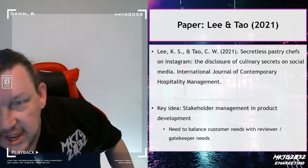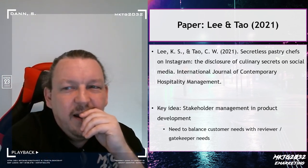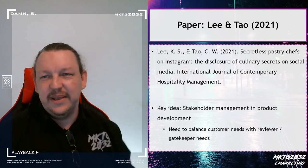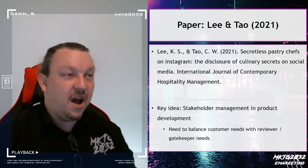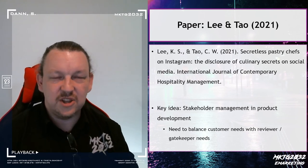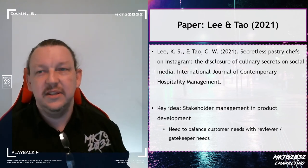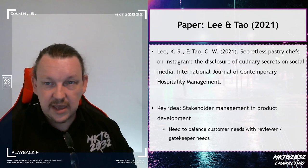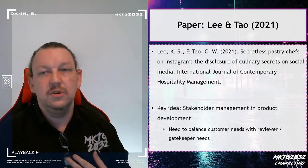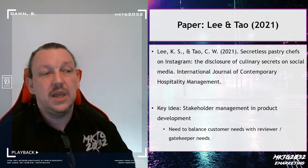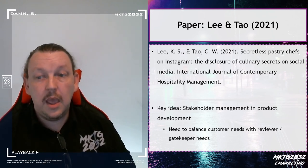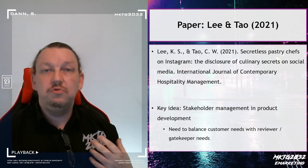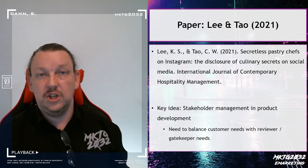I want to talk about today's paper. I get a little excited about things — this is a freaking brilliant paper. I had no idea that there was such an intense Instagram activity around pastry chefs. The key idea I've taken out of this paper: first, stakeholder management in product development is really important. Balancing multiple possible competing stakeholders is a really central idea, particularly in the pastry chef industry.